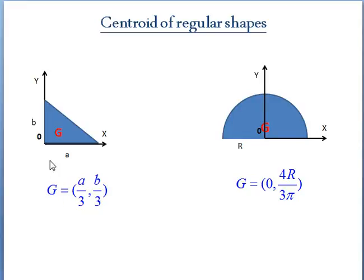For right angle triangle, the centroid will be at a by 3 and b by 3 from the origin. And for semi-circular shapes, the centroid will be at 4R by 3π distance from the origin. If a circle, then it is definitely 0 comma 0. And if it is a quarter circle, then it will be 4R by 3π comma 4R by 3π from the origin. Thank you.